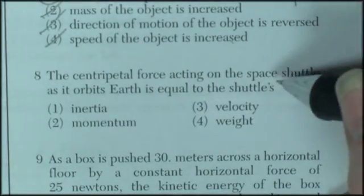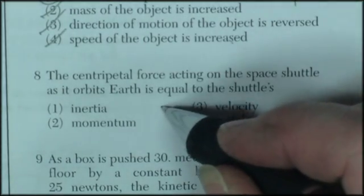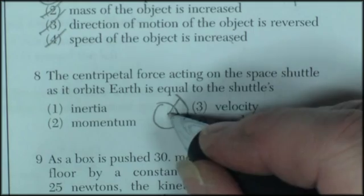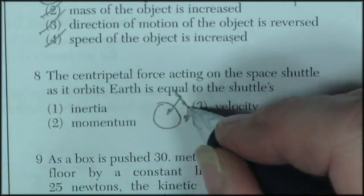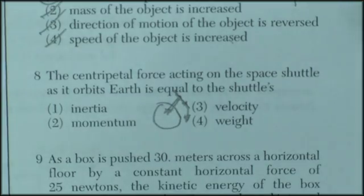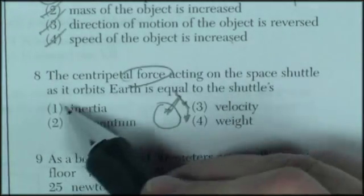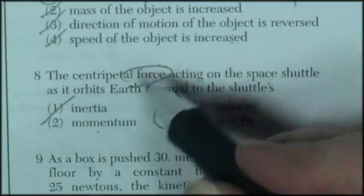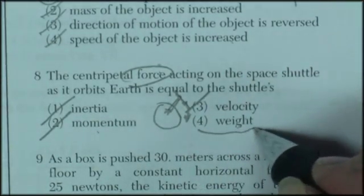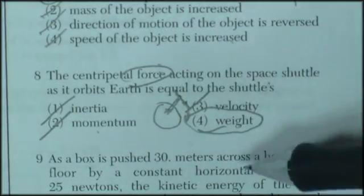Question eight. The centripetal force acting on the space shuttle as it orbits Earth is equal to the shuttle's. It works like this. Centripetal force pulling it in. It's in perfect balance. So the centripetal force must be equal to the weight of the object. Now let's look at the possible choices. Inertia. Inertia is mass. We're looking for a force. That won't be right. Momentum. That's not force. Velocity. That's not a force. Weight is the only option given to us that's even a force. So that has to be the correct answer.